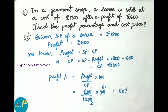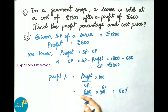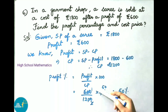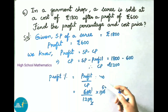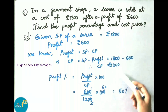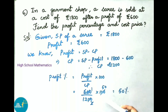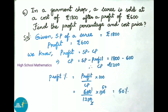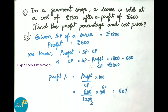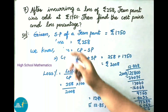Profit percentage equals profit by cost price into 100, that is 600 by 1200 into 100. Simplifying: 600 by 1200 reduces to 1 by 2, then 1 by 2 into 100 gives 50. Therefore profit percentage on sari is 50 percent.